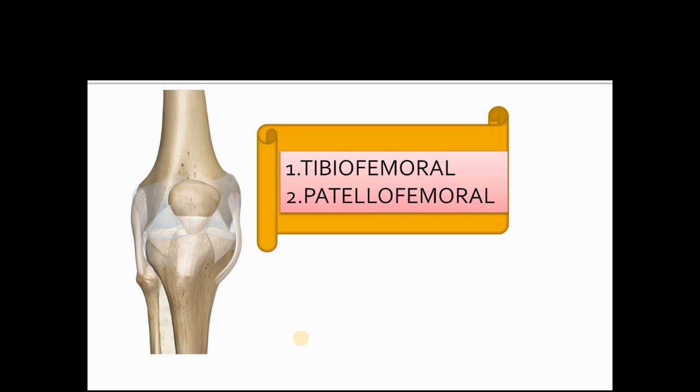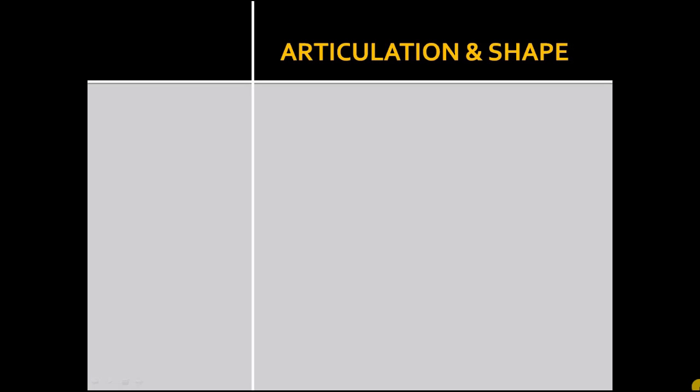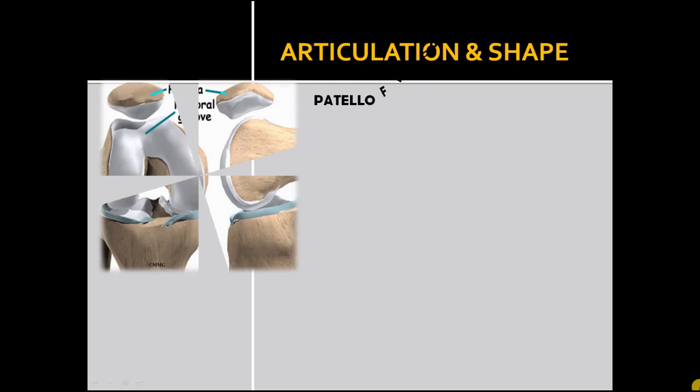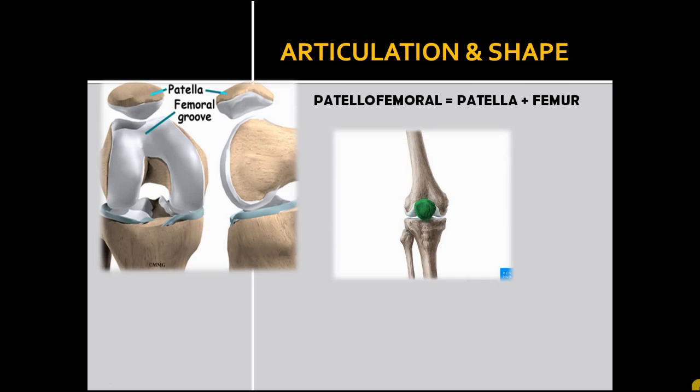The patellofemoral joint is formed between the patella and the femur. The patella is the largest sesamoid bone in the body. It is a triangular-shaped bone with its apex directed inferiorly.